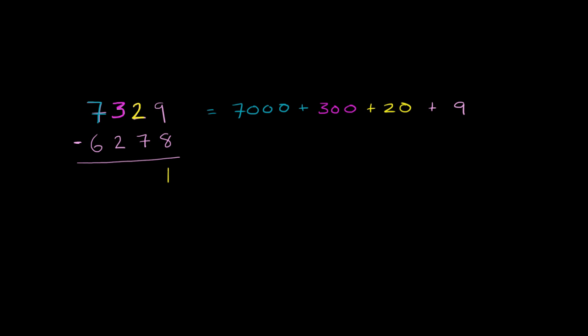And then down here, we have the 6 in the thousands place, that's just going to be 6,000 and we're subtracting. So minus 6,000. Then here we have a 2 in the hundreds place, and we're going to be subtracting 200. Then here in the tens place we have our 7, so 7 tens, that's 70. And then we are subtracting that 8.